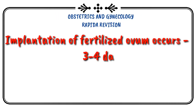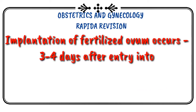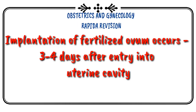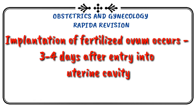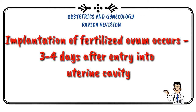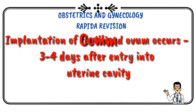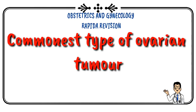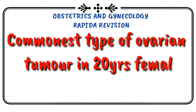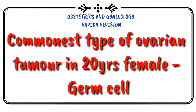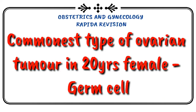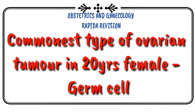Implantation of the fertilized ovum occurs 3 to 5 days after entry into the uterine cavity. Commonest type of ovarian tumor in a 20-year-old female is germ cell tumor.